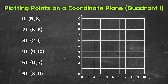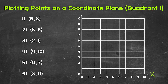Remember, the x-axis is horizontal, so it goes side to side. This is the x-axis right here. And then we have the y-axis, which is vertical, so it goes up and down. This is the y-axis right here. Let's jump into our examples.